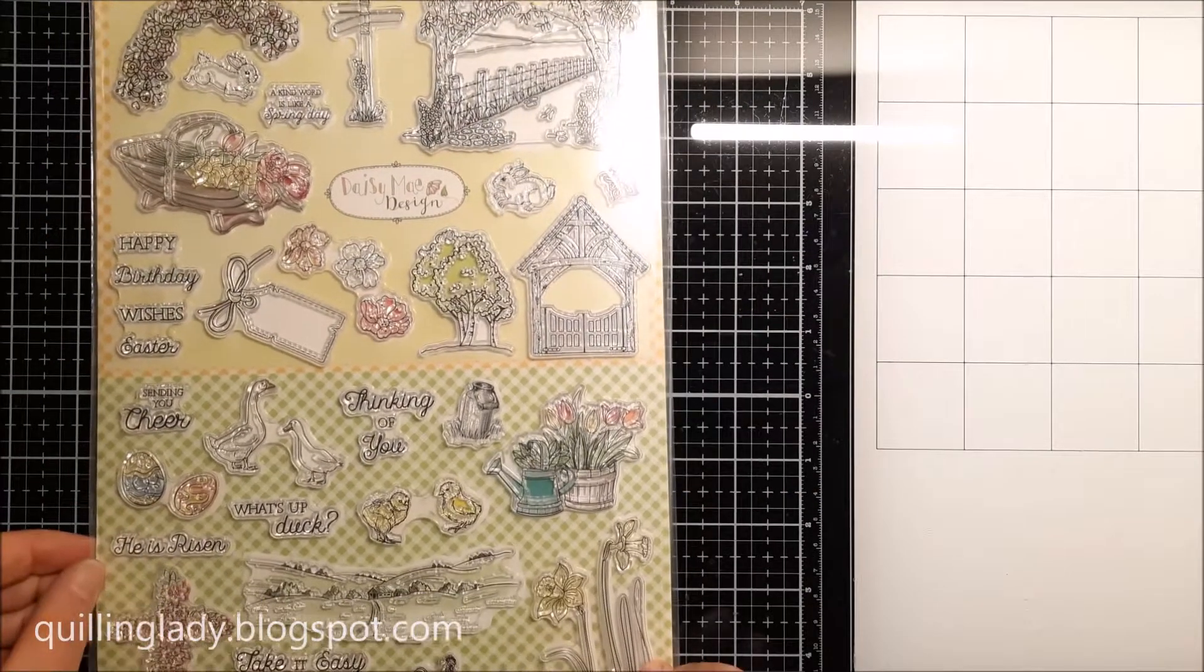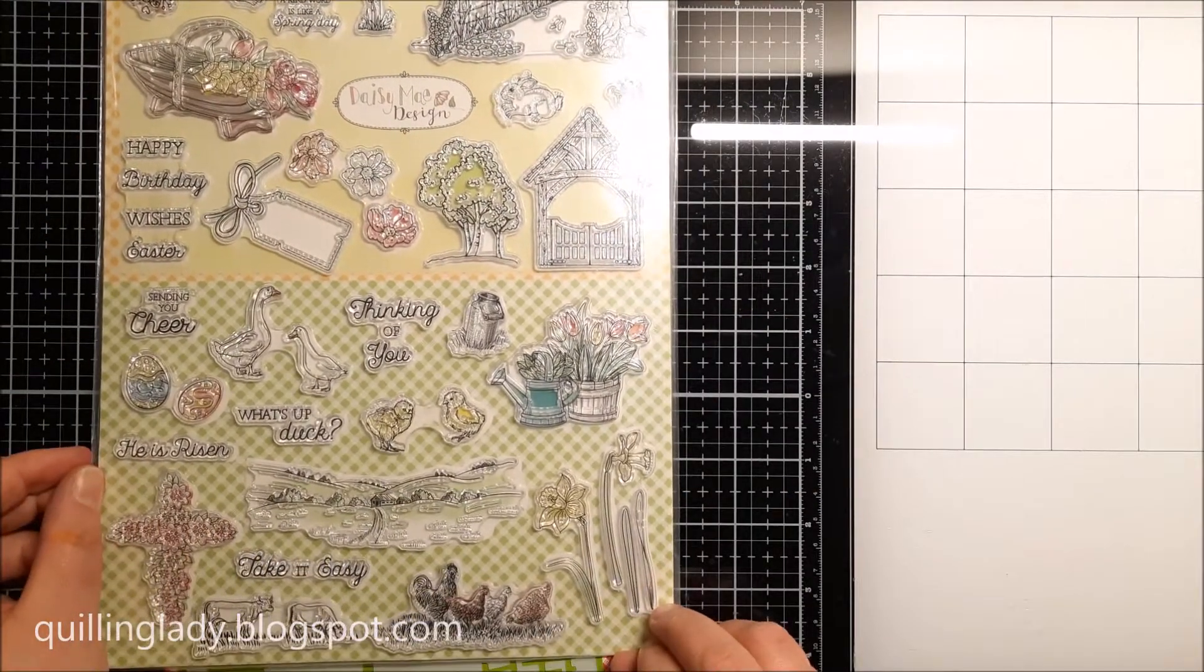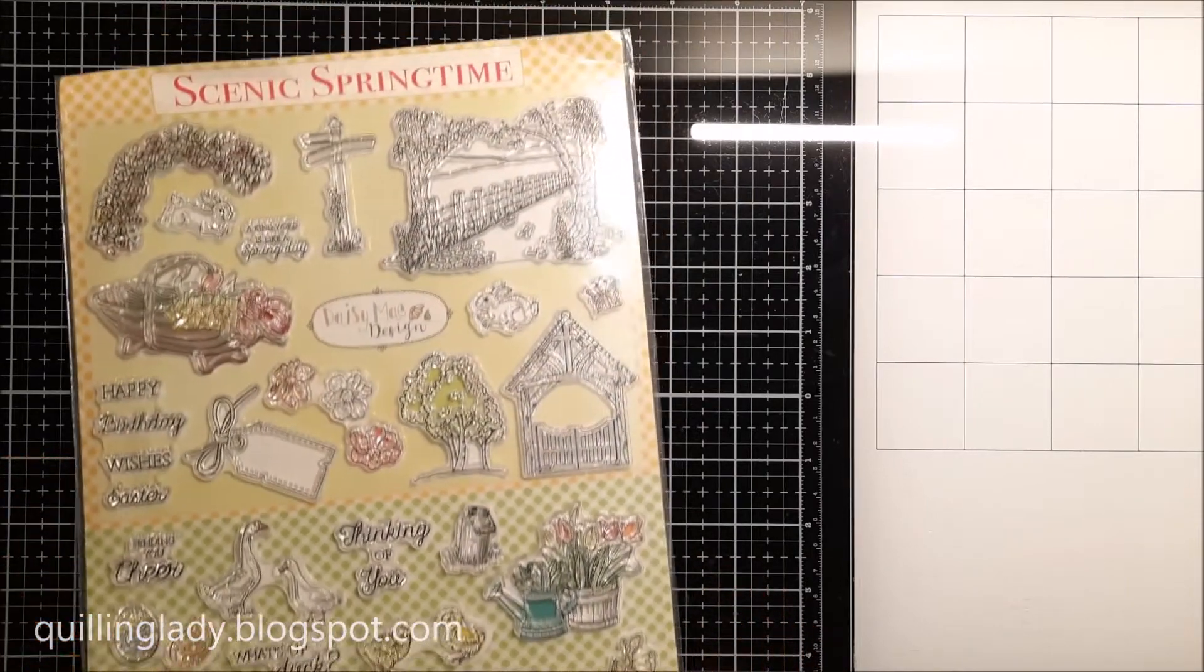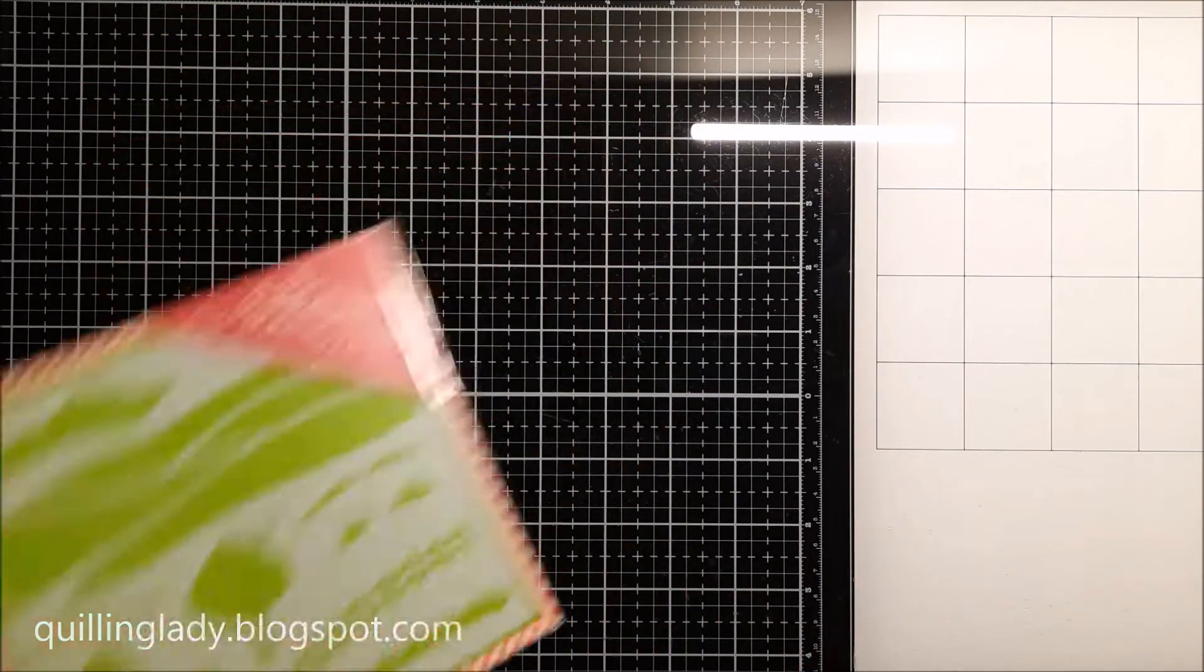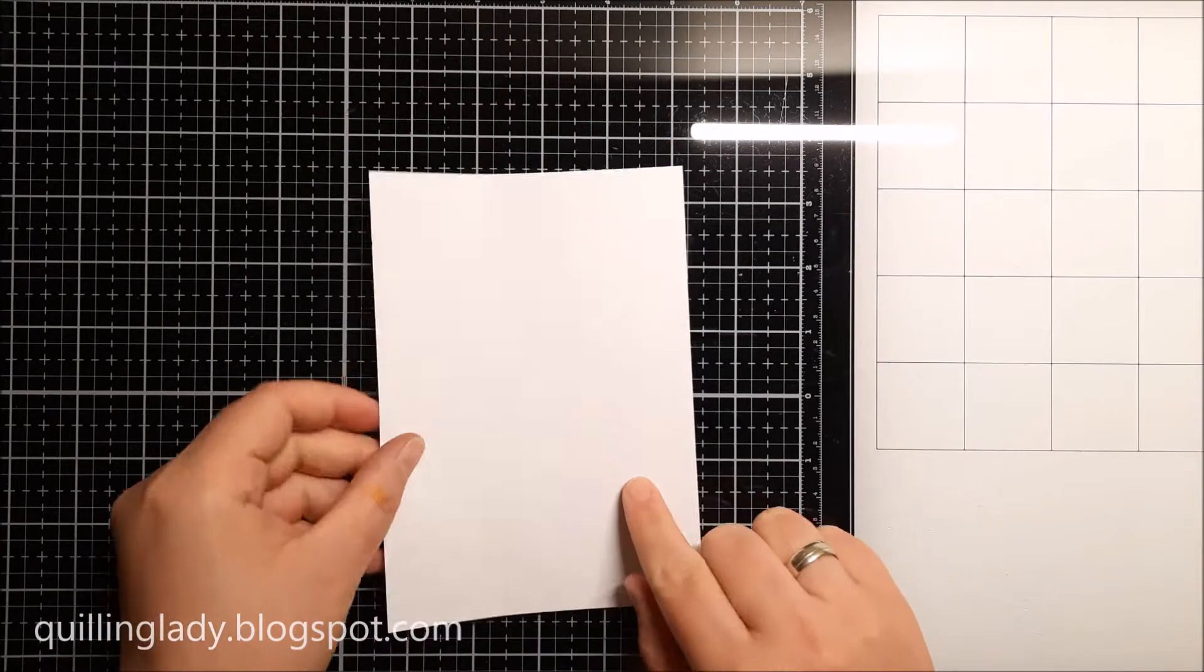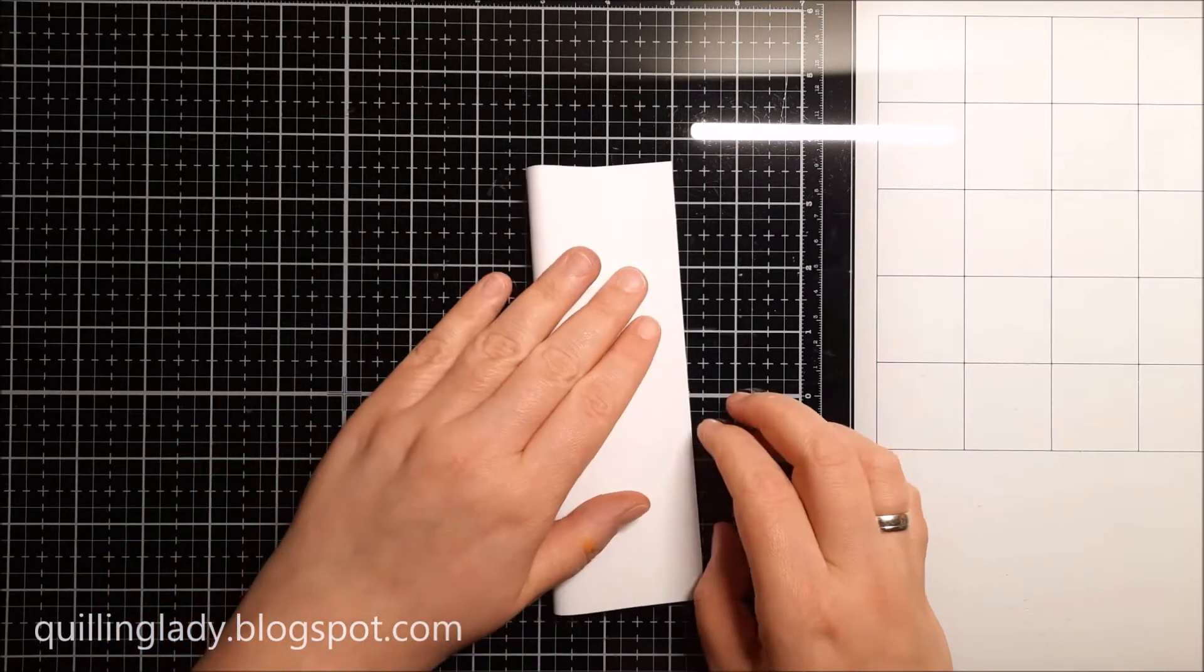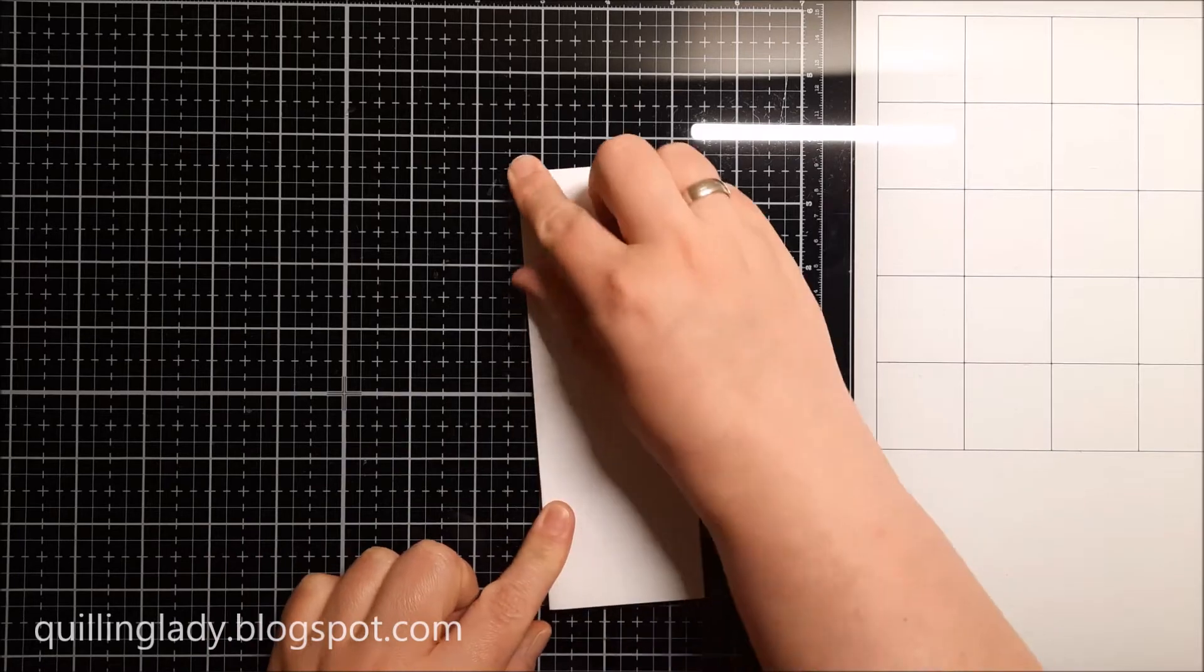The magazine comes with a four size stamp set called Singing Springtime and it also has a matching stencil which you can use for a variety of projects. First, I've got a piece of copy paper and this one measures 12 by 17 centimeters.